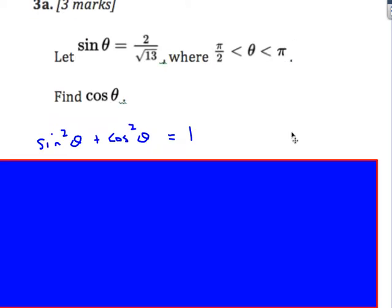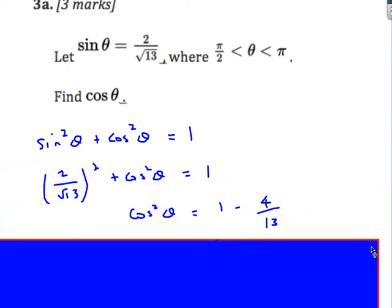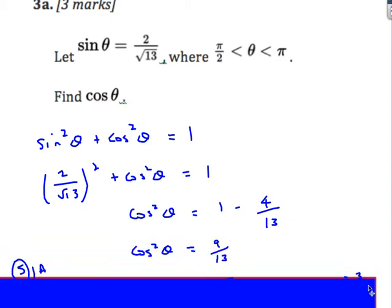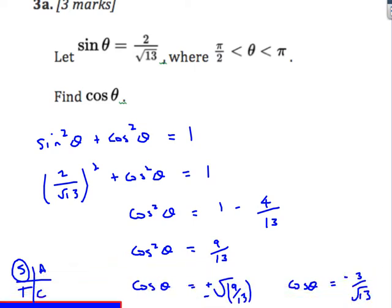Another question. Sin θ = 2/√13; find cos θ, with θ in the second quadrant. Using sin²θ + cos²θ = 1 and substituting, cos²θ = 1 − 4/13 = 9/13. Taking the square root gives ±3/√13. Since we're in the second quadrant where only sine is positive, cos θ is negative: cos θ = −3/√13.